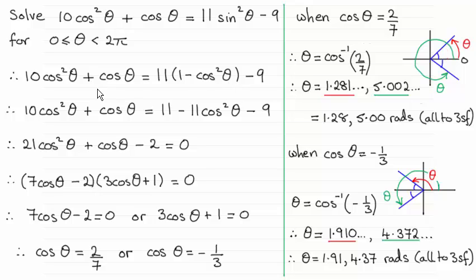And then I've expanded this bracket to give me this, and then I've rearranged it so that we create this quadratic equation in terms of cos theta. Then in the usual way you solve this by factorising and putting each factor equal to zero and arriving at these two answers for cos theta: two sevenths or minus a third.